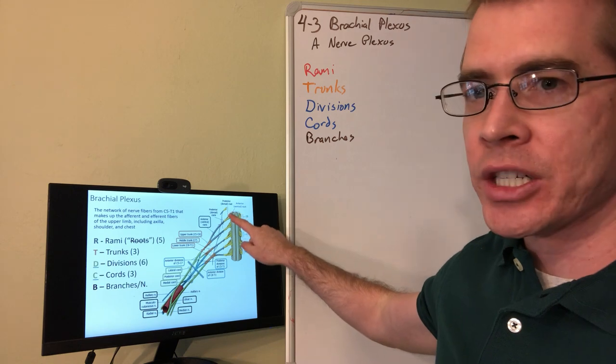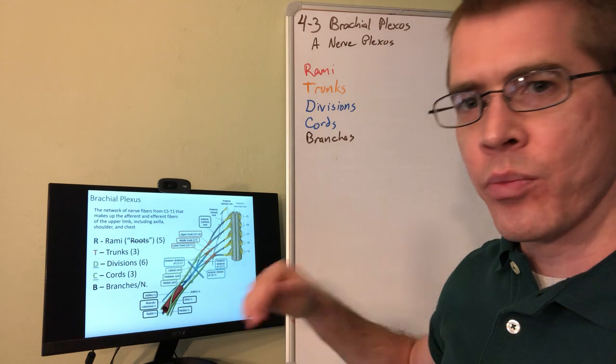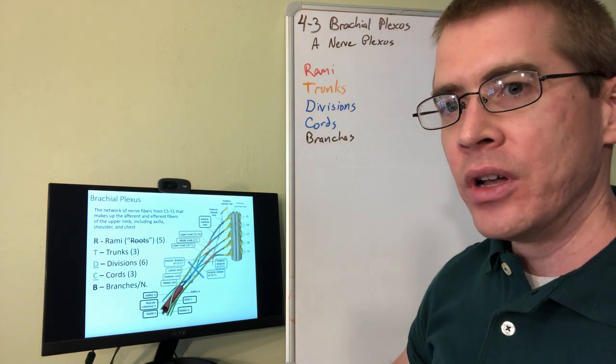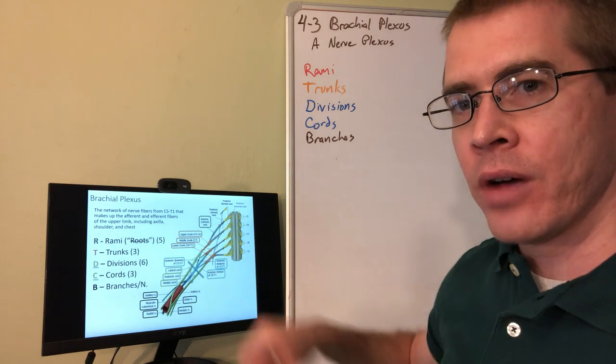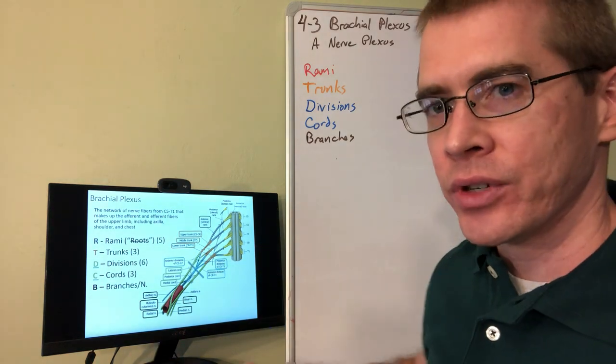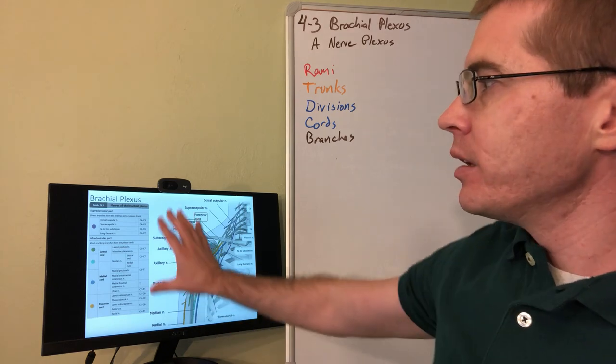The roots are actually within the vertebral canal. So these are the roots here. So there are no branches coming off of the roots, but there will be branches that you have to identify coming off of the rami outside the vertebral canal.